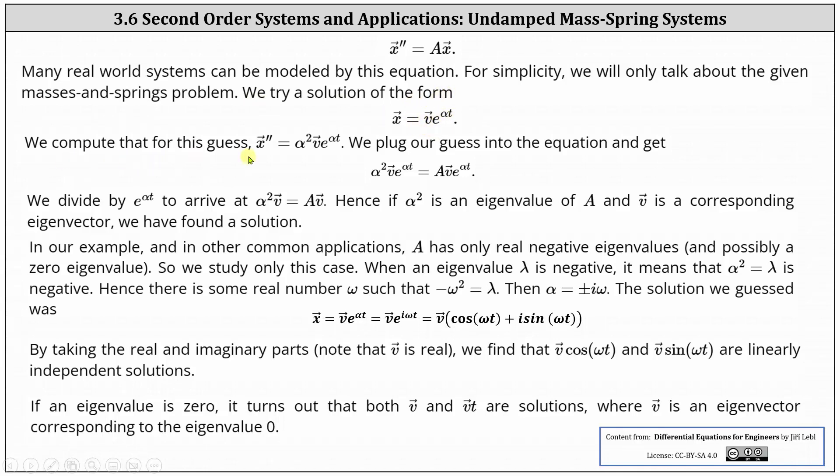We try a solution in the form of X equals V times e to the power of alpha T. We compute that for this guess, X double prime is equal to alpha squared times V times e to the power of alpha T, which requires the chain rule. We plug our guess into the equation and get the equation shown below: alpha squared times V times e to the alpha T equals A times V times e to the alpha T.